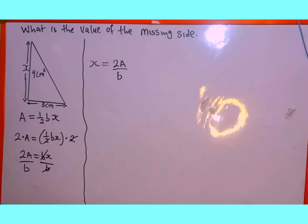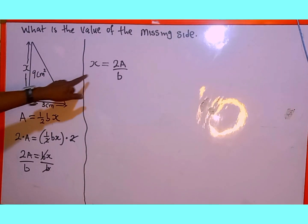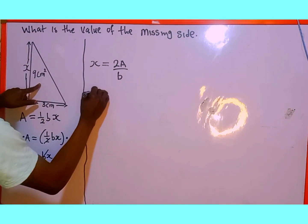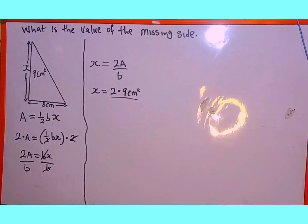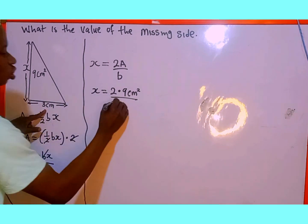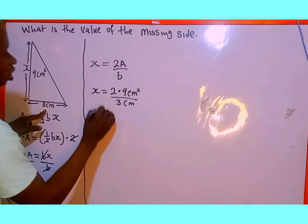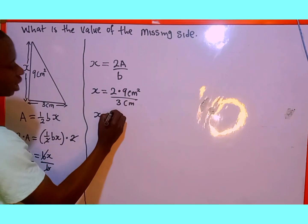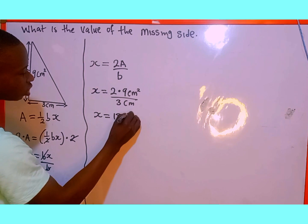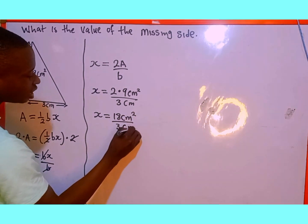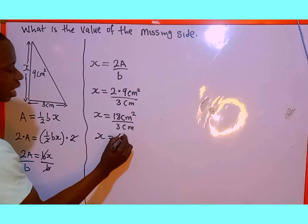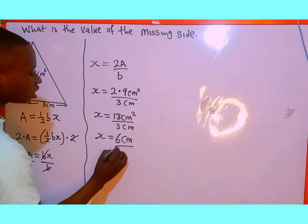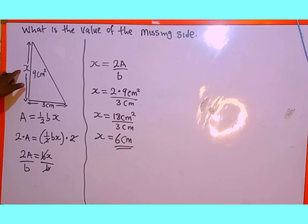Now we can go back to the triangle and substitute. The area is 9 centimeters squared and the baseline b is 3 centimeters. So x equals 2 multiplied by 9 centimeters squared over 3 centimeters, which gives us 18 centimeters squared divided by 3 centimeters. 18 divided by 3 is 6, and centimeters squared divided by centimeters leaves only centimeters. So the missing side of this triangle is 6 centimeters.